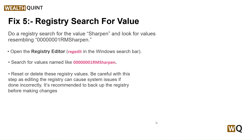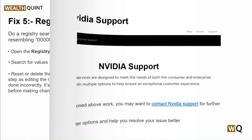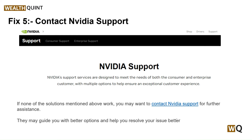Our fifth step is a registry search. Search for the value name 'sharpening' and look for a value resembling '001rmssharpening'. Open the Registry Editor by typing 'regedit' in the Windows search bar, then search for that value name. Reset or delete this registry value — but be careful, as editing the registry can cause system issues if done incorrectly. It is recommended to back up the registry before making any changes.